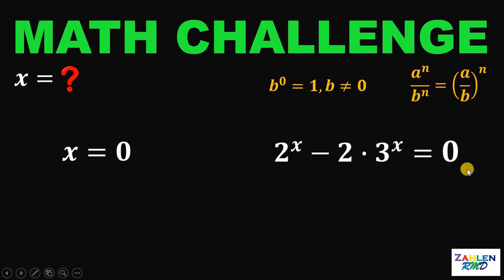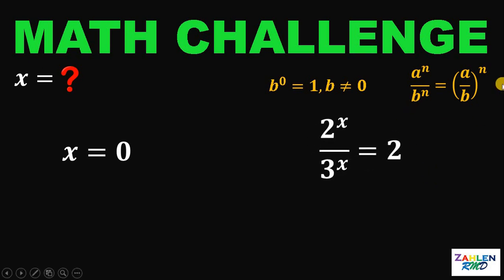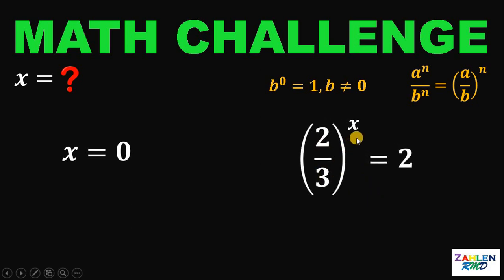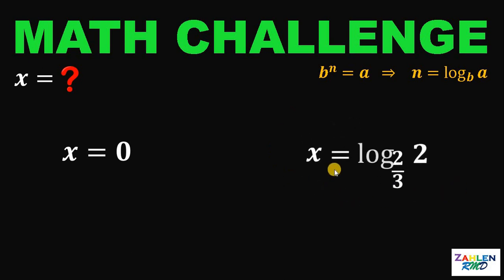Now for the second equation, we do the same thing. Add 2 times 3 raised to x on both sides, then divide both sides by 3 raised to x. Using this property, 2 raised to x over 3 raised to x is just 2 over 3 raised to x. We now have an exponential equation. If we have b raised to n equals a, we can rewrite it as n equals logarithm of a to the base b. Therefore, this exponential equation can be written as x equals logarithm of 2 to the base of 2 over 3.